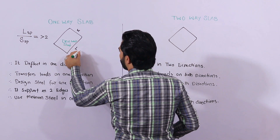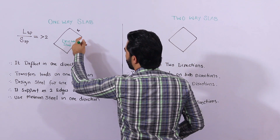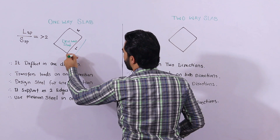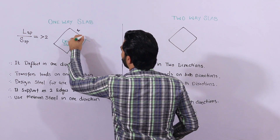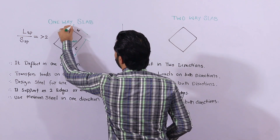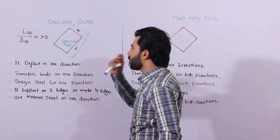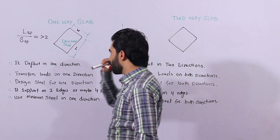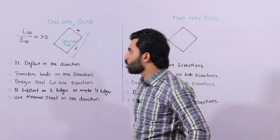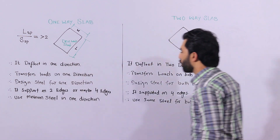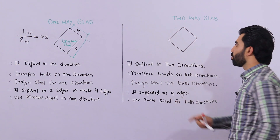Again, this is the shorter span and this is the longer span. When the longer span divided by the shorter span gives a value more than two, this is called a one-way slab.